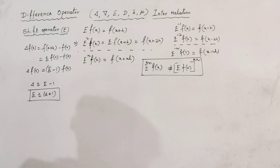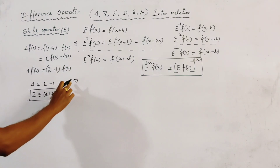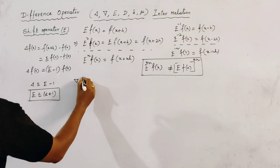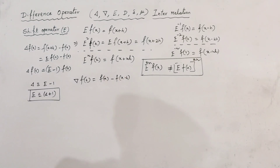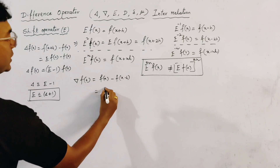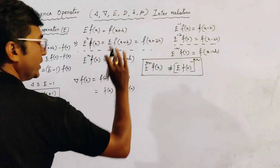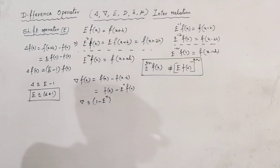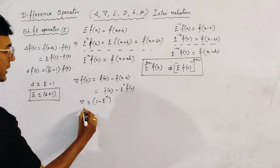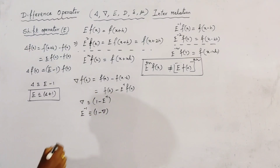Also, from this relation, we define the backward difference operator nabla (∇). This is given by nabla f(x) = f(x) - f(x - h), which we write as f(x) - E inverse f(x). This gives nabla equivalent to 1 - E inverse, and from here E inverse is equivalent to 1 - nabla. This is the relation between the shift operator and the backward difference operator.